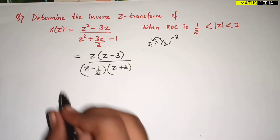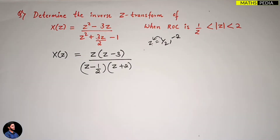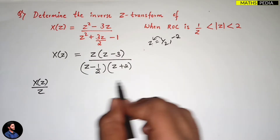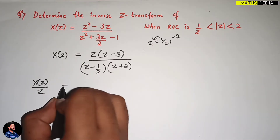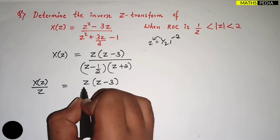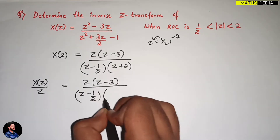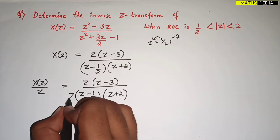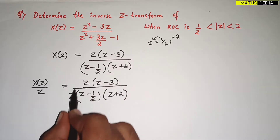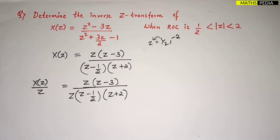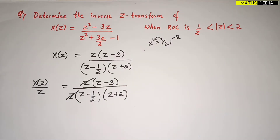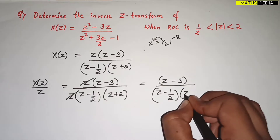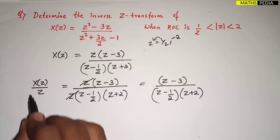Now compute X(Z)/Z. X(Z) = Z(Z - 3) / [(Z - 1/2)(Z + 2)]. Dividing the whole expression by Z, the Z in the numerator cancels, leaving X(Z)/Z = (Z - 3) / [(Z - 1/2)(Z + 2)]. This is the simplified version.